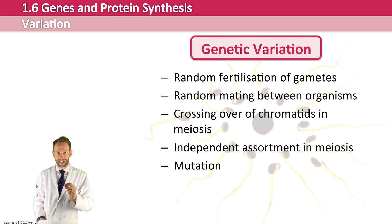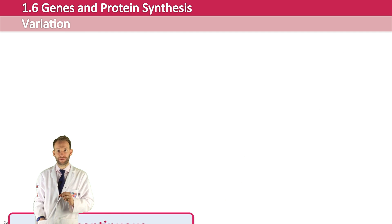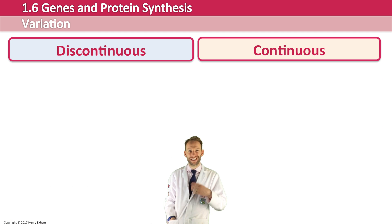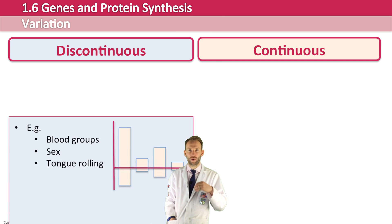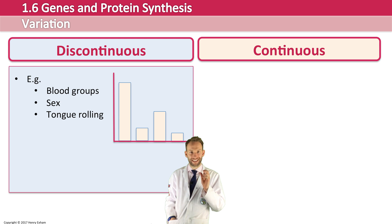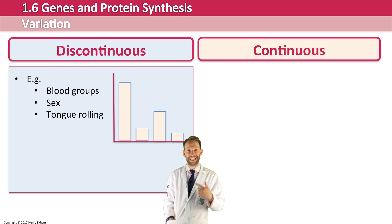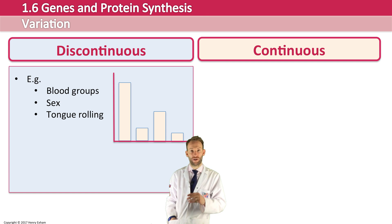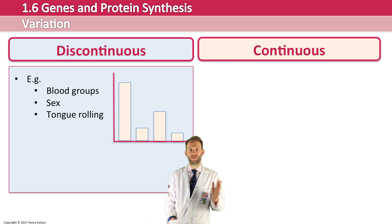When you study variation, you can split it into two types: discontinuous and continuous. Discontinuous variation involves qualitative differences, which tend to have no in-between forms — they are distinct categories. Things like blood groups (you're either A, B, AB, or O), your sex (either male or female), and tongue rolling (you can either roll it or you can't). There are no in-between values.